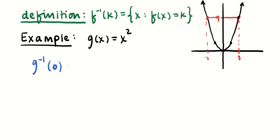How about g inverse of 0? g inverse of 0 is going to be the set of all points where g(x) equals 0. So that's x squared equals 0, and that's just 0. So you go on the y-axis to 0, there was just one point at x equals 0. So g inverse of 0 is equal to 0.